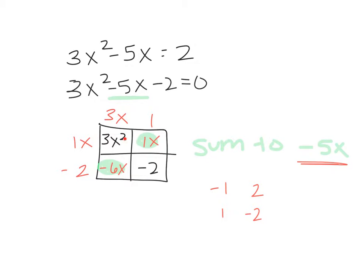So it's always a good idea. The cool thing about the area model is it helps us check our work. 3x times 1x is 3x squared. 1 times 1 is 1x. 3x times negative 2 is negative 6x. And 1 times negative 2 is negative 2. And do these sum to that negative 5x? They do. So it's a self-checking method as long as we use it. So now I know my factors are 3x plus 1 and 1x minus 2.